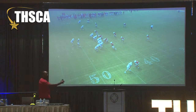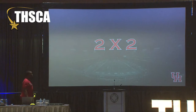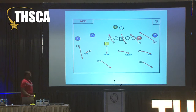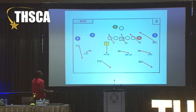Two by two — same thing. If it's a single X and it's not two open receivers into the boundary, we're still going to bring the corner. Any time we get an ace formation or a single X without two detached receivers, we're still going to bring it from the boundary.